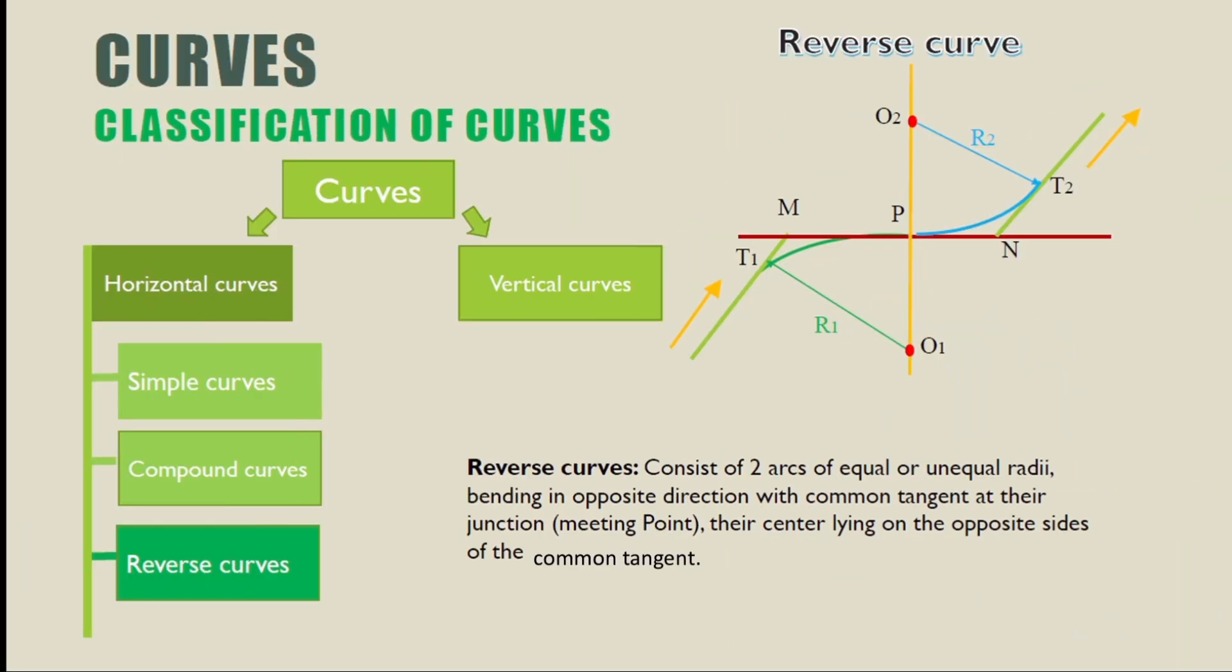Reverse curve consists of two arcs of equal or unequal radii bending in opposite directions with common tangent at their junction, their centers lying on the opposite sides of the common tangent.